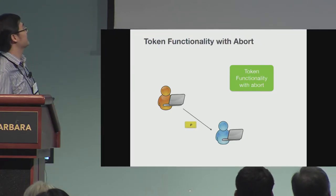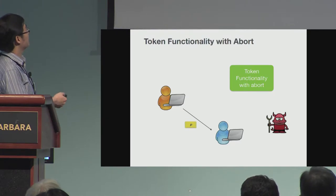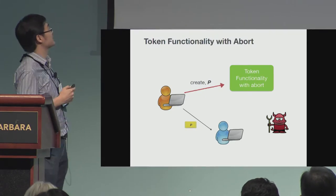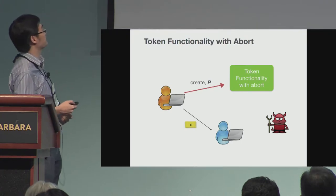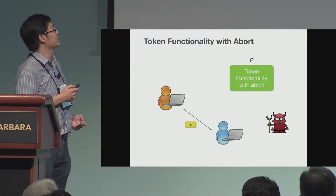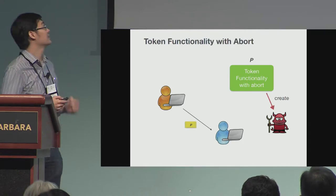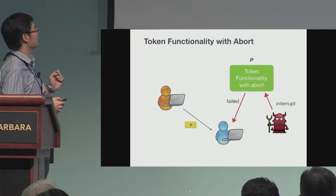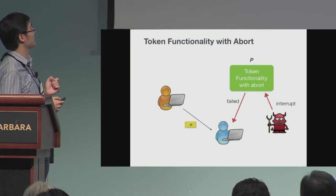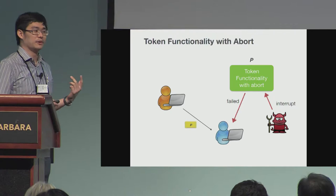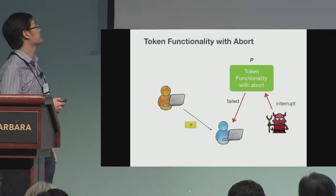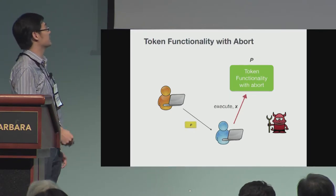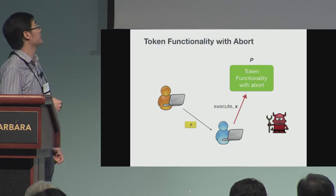The token functionality with abort is similar to the standard token functionality. The sender sends a message to the functionality to create a token with program P. The token functionality notifies the adversary first. The adversary can choose to interrupt token creation — in that case, the receiver is notified that token creation has failed and will not be able to execute P on any input. The adversary can also choose to ignore the creation, and just like the standard token functionality, the receiver can execute P on any input X.